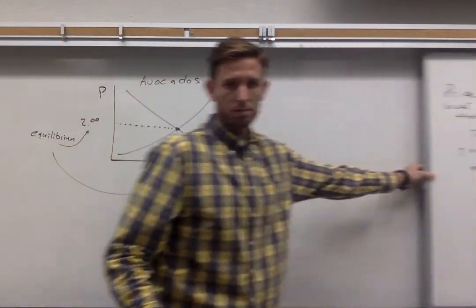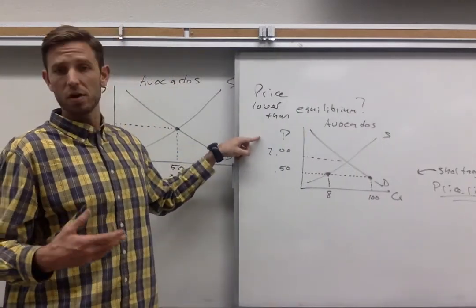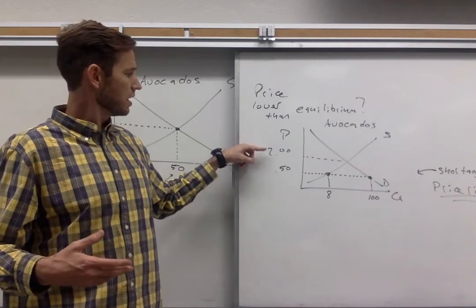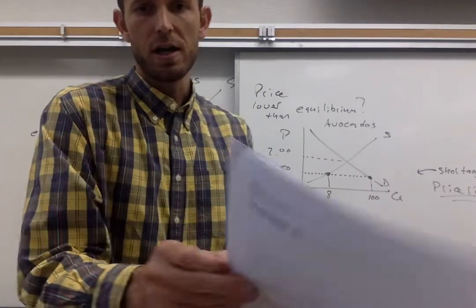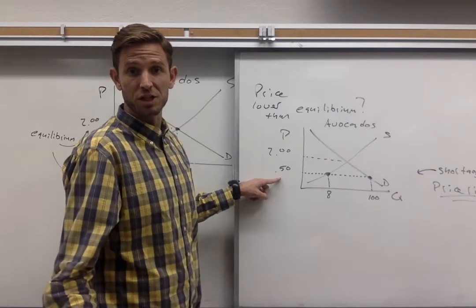I'm going to pull the board over here. In this next scenario, let's assume that the price happens to be lower than the equilibrium. So we're not seeing two bucks for an avocado. Instead, let's just say that the price is only 50 cents per avocado. So that's pretty cheap.